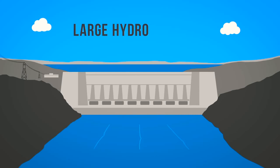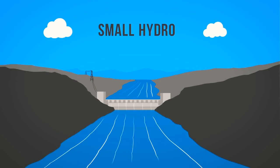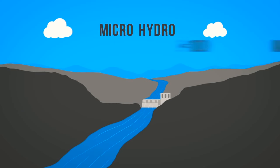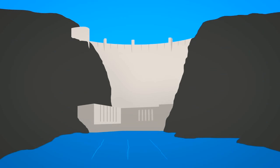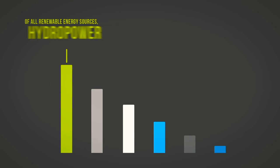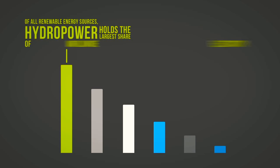There are various sizes of hydro plants that produce electricity: large hydro, greater than 30 megawatts; small hydro, 100 kilowatts to 30 megawatts; and micro hydro, less than 100 kilowatts. The Hoover Dam in the United States is a whopping 2,074 megawatts, which is enough to serve 1.3 million people. Of all renewable energy sources, hydropower holds the largest share of worldwide electricity production.